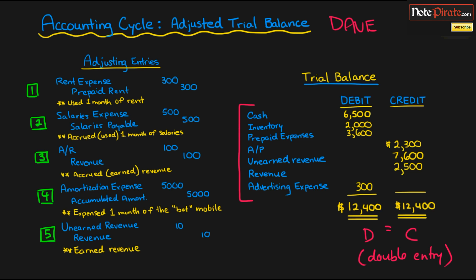I've got the five different categories of adjusted entries that we've prepared. We have prepaid expenses at number one, accrued expenses at number two, accrued revenues at number three, amortization expense at number four, and unearned revenue adjusted entries as number five. Since these adjusted entries were performed after we made this original trial balance, we're going to need to update the balances of these accounts if they've been changed or adjusted. And if there are new accounts being created, we have to add them to our trial balance and create a new adjusted trial balance.